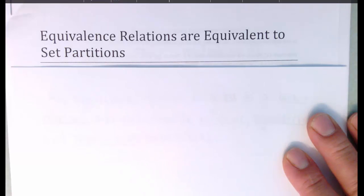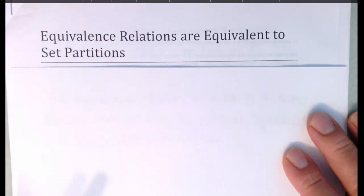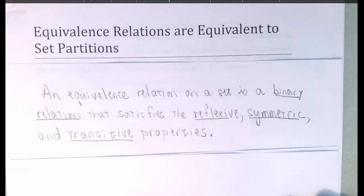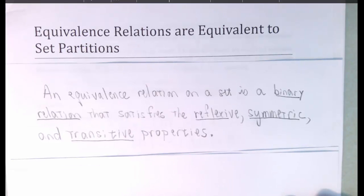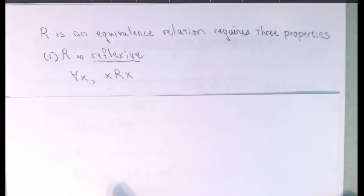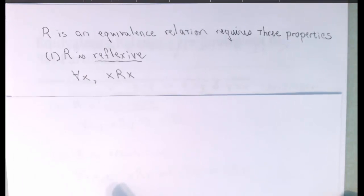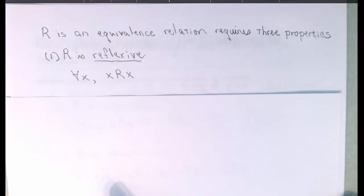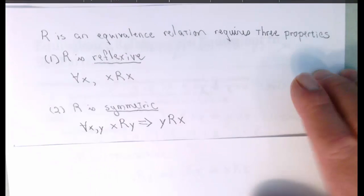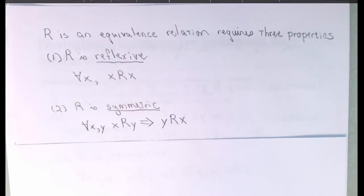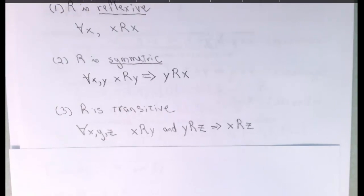Before we do, it would be helpful to remind ourselves of what we mean by an equivalence relation. An equivalence relation on a set is a binary relation that satisfies three properties: the reflexive, the symmetric, and the transitive properties. The reflexive property says that for every x in the set, x is related to itself. The symmetric property says that if x is related to y, then y is related to x. And the transitive property says that if x is related to y and y is related to z, then x is related to z.